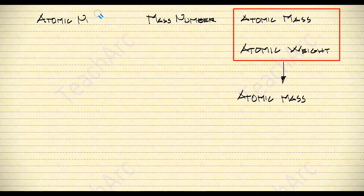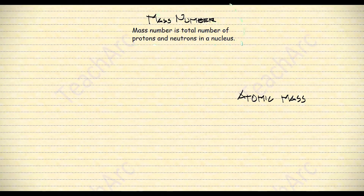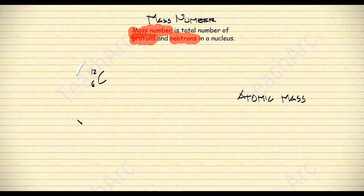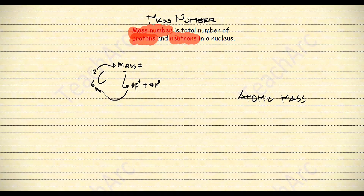Now let's focus on mass number and atomic mass. The mass number is the total number of protons and neutrons in an atom's nucleus. Going back to carbon-12, the mass number is usually written above — some write it below — but in any case, the bigger number is always the mass number. Carbon-12 has 6 protons and 6 neutrons, so the mass number is 12.